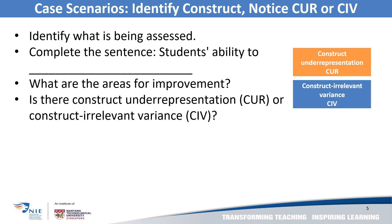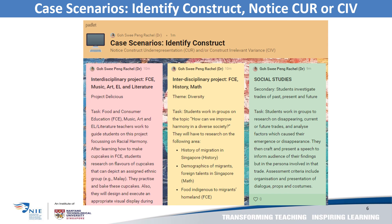Construct underrepresentation, or CUR, essentially talks about something critical being missing in the task design. For construct irrelevant variance, extraneous items have been included such that students with the true ability find it difficult to demonstrate their understanding. Have a go at that, and you will get feedback on your thinking in the next segment. Read the case scenarios shown in Padlet and post your ideas in the comment box to identify the construct and notice whether there is any CUR or CIV involved.